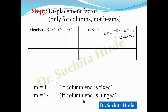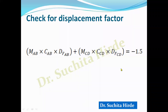We know that after calculating rotation factor, the sum of rotation factors at a joint must equal minus 0.5. Similarly, after calculating displacement factors, we check them by verifying: M_AB × C_AB × D_AB plus M_CD × C_CD × D_CD equals minus 1.5. If you get minus 1.5, the calculated displacement factors are correct.